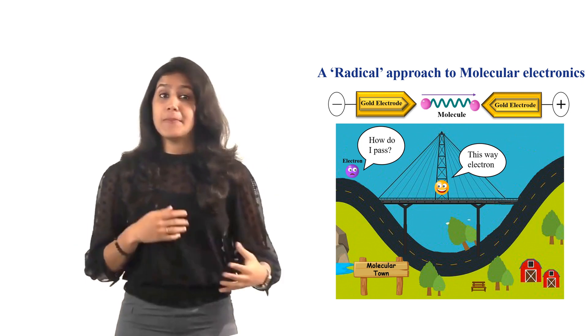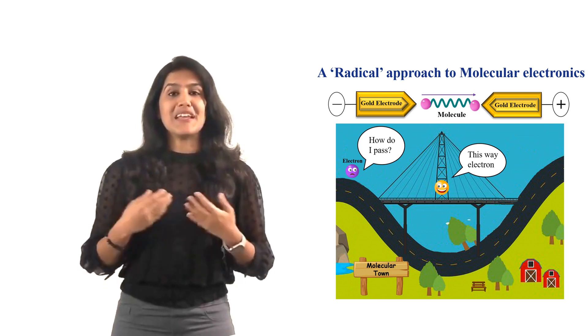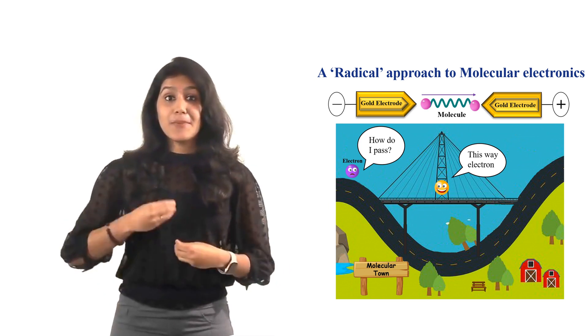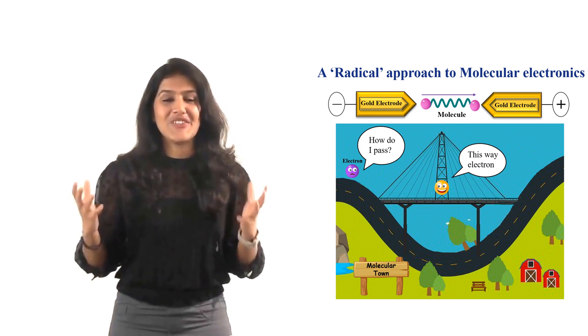Electrons are like humans. They prefer to get paired up and that's what happens in normal molecules. But in my project I study some special ones that possess an odd electron that can stay single. These are called radicals.